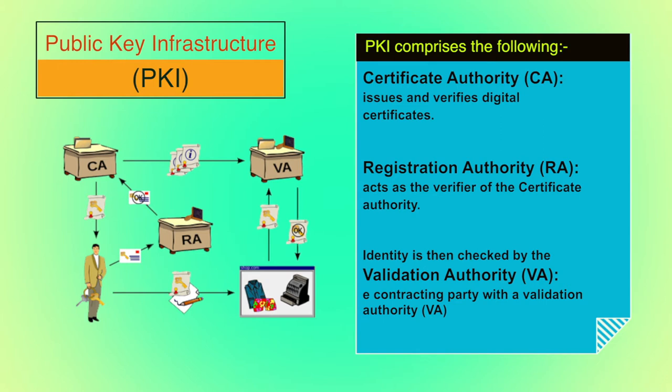A certificate authority issues and verifies digital certificates. A registration authority, RA, acts as the verifier of the certificate authority. First, a user applies for a certificate with his public key at a registration authority. The latter confirms the user identity to the certification authority, which in turn issues the certificate. The user can then digitally sign a contract using his new certificate, and his identity is then checked by the contracting party with the validation authority, VA, which again receives information about issued certificates by the certification authority.